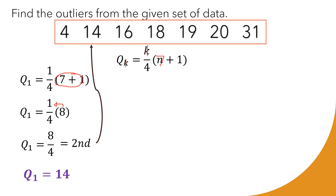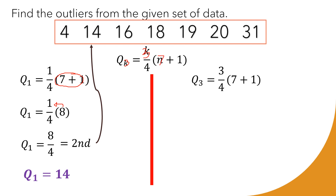Done with Q1. Next, we compute Q3. This time we replace k with 3 because we are computing for Q3, and n remains 7 since we are dealing with the same data. Writing this clearly, we simplify Q3 = (3/4) × (7 + 1). Simplifying 7 + 1 gives us 8 as well.